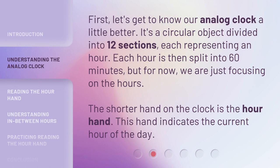First, let's get to know our analog clock a little better. It's a circular object divided into 12 sections, each representing an hour. Each hour is then split into 60 minutes, but for now we are just focusing on the hours. The shorter hand on the clock is the hour hand. This hand indicates the current hour of the day.